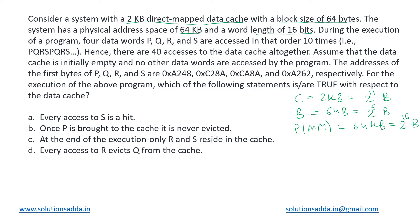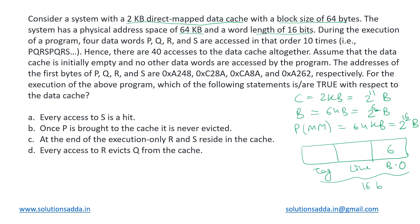Since the block size is 64 bytes or 2 to the power 6, the block offset will take 6 bits. The address is 16 bits long. The number of lines is given by cache size divided by block size: 2 to the power 11 divided by 2 to the power 6, which equals 2 to the power 5, so there are 32 lines taking 5 bits. The remaining bits — 16 minus 6 minus 5 — give us 5 tag bits. So the address is split as: 5 tag bits, 5 line bits, and 6 block offset bits.